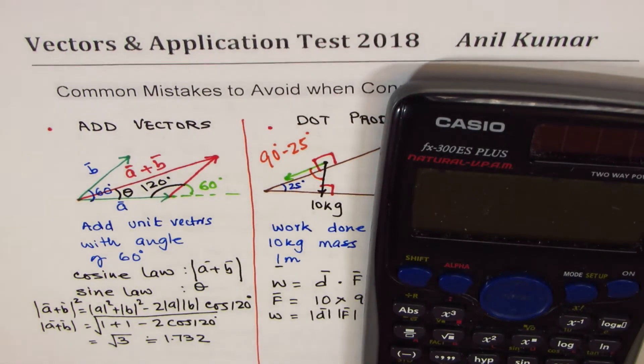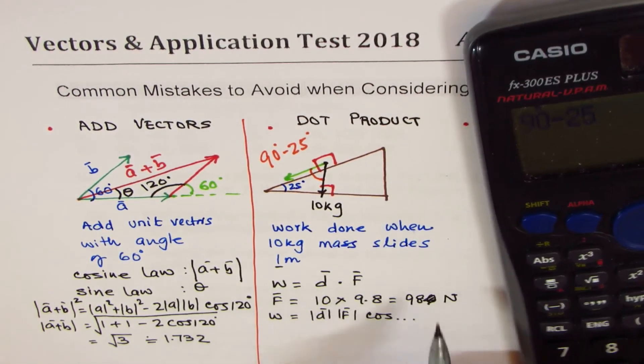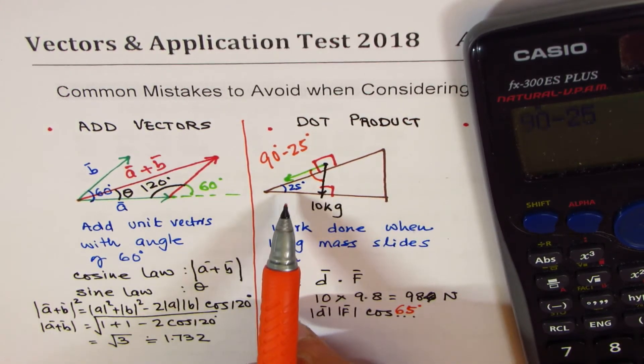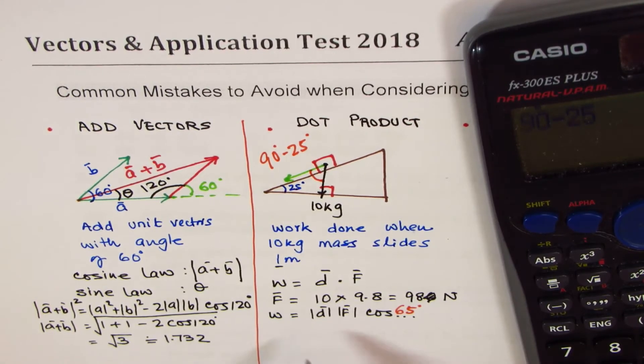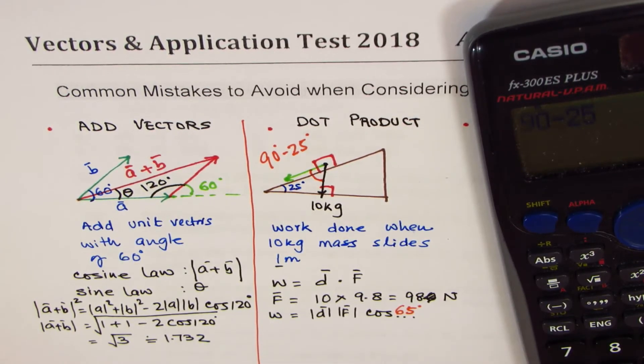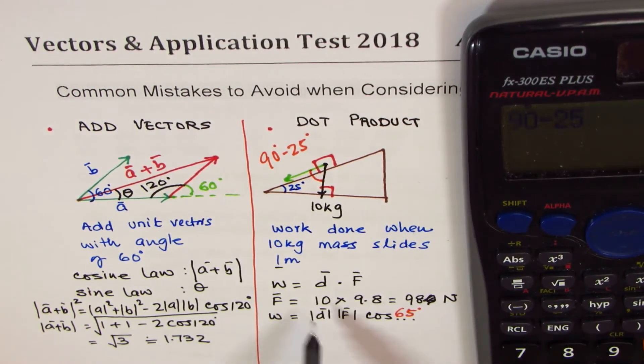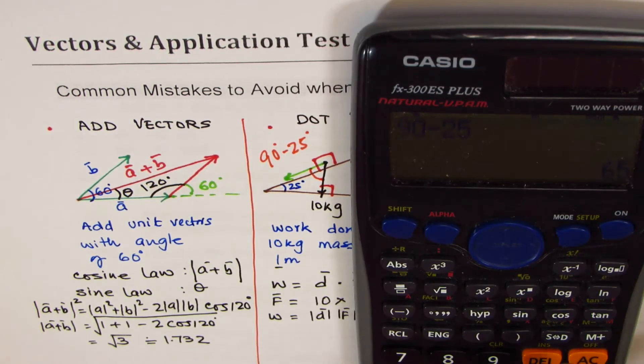So let's now calculate. I'll do 90 minus 25 first and then take cos of this. So the angle here is 65 degrees, not 25. I hope you agree with me. So work done is a scalar quantity. Joules is the unit. You can say newton meter. Joules is the unit. Displacement of 1. So we can now calculate. Let me do calculate cos of this, cos of our angle. And we'll multiply this by the force, 98.